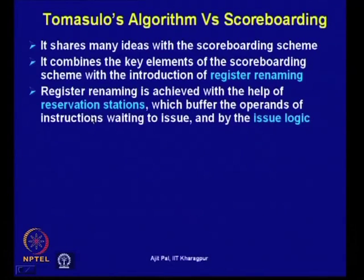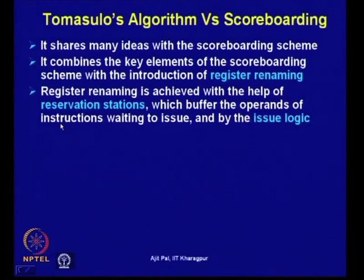Register renaming is achieved with hardware known as reservation stations. In the reservation stations, the operands are buffered — instead of writing into a register or temporary register, we use reservation stations where operand values are buffered. From the reservation station, values can be provided directly to the execution unit, buffering operands of instructions waiting to issue.